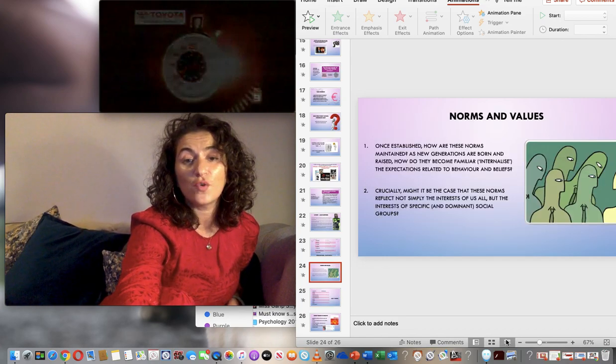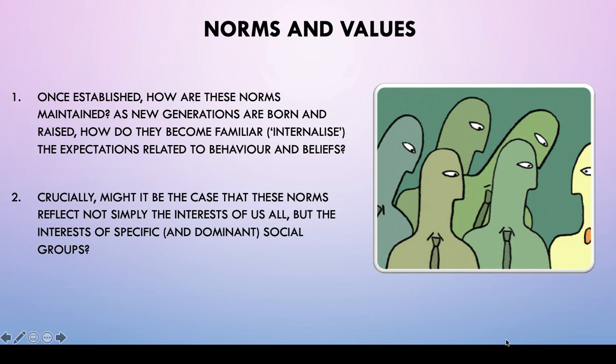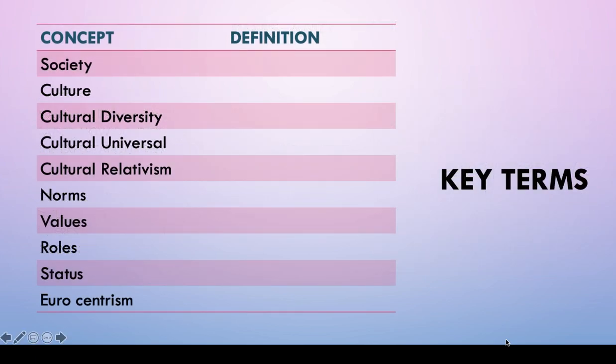Please do answer this for me, pause the video, and then return. So, your key terms — I want you to find these out and send them to me please. The concepts we will definitely use and which will become part of our vocabulary: society, cultural diversity, cultural universal, cultural relativism, norms, values, roles, status, Eurocentrism, ethnocentrism, the hidden curriculum, elaborated and restricted codes, internal and external factors. All of these words will be used in our vocabulary as if you have grown up with them, because as sociologists you need to know what these are.